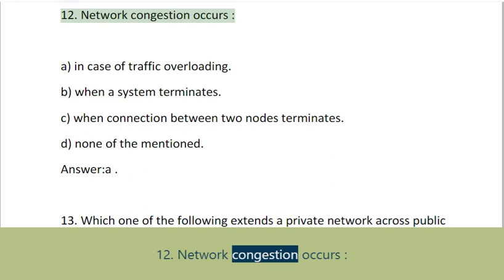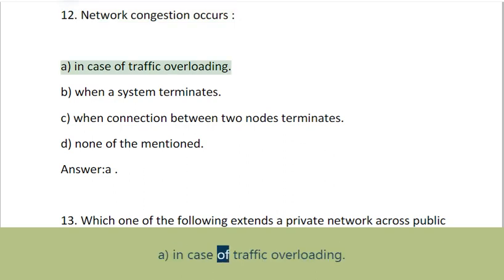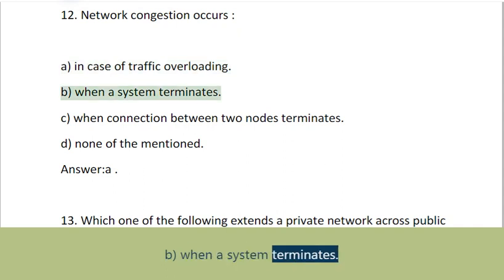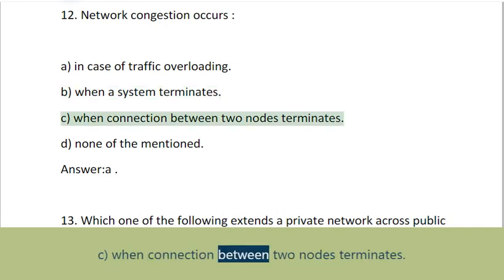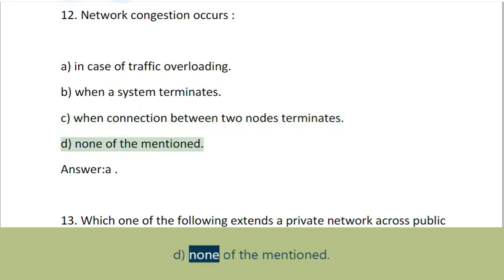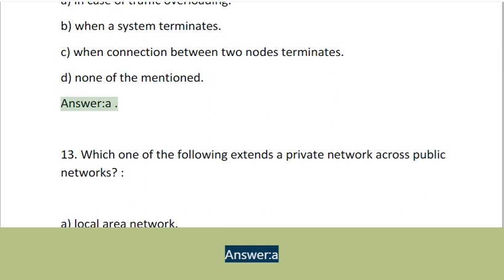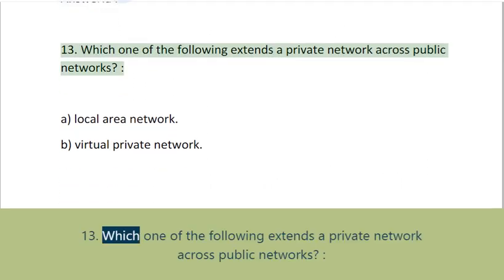Question 12: Network congestion occurs: A. In case of traffic overloading, B. When a system terminates, C. When connection between two nodes terminates, D. None of the mentioned. Answer: A.